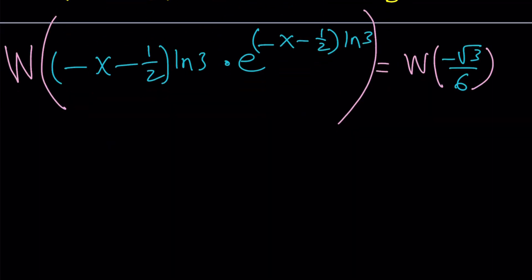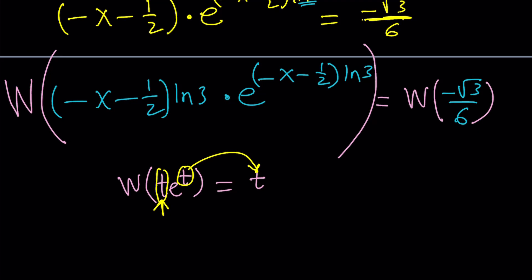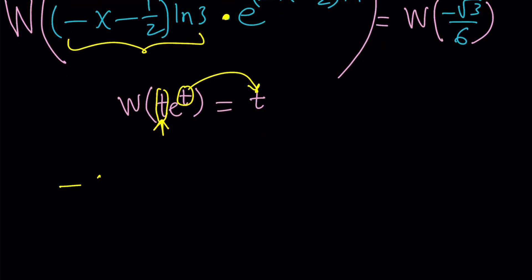Now, what happens with Lambert's w function? Whenever you get something like t e to the t as an input, your output is going to be t. So, fairly simple, right? You take this product and it just turns it into a t. Cool. Or coffee. Whatever. If you pick coffee here, then you'll get a coffee. Whatever you like. Or juice. No, orange juice. That's one of my favorites. Anyways. So, when you apply Lambert's w, this is my t here. So, it's going to give you negative x minus 1 half multiplied by ln 3 equals w of negative root 3 over 6.